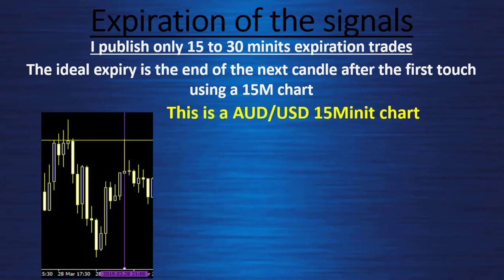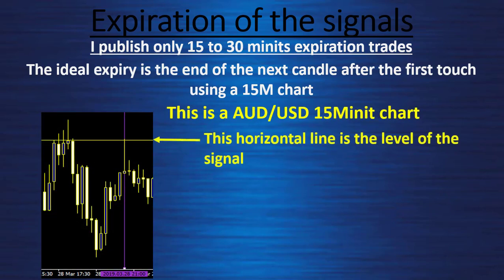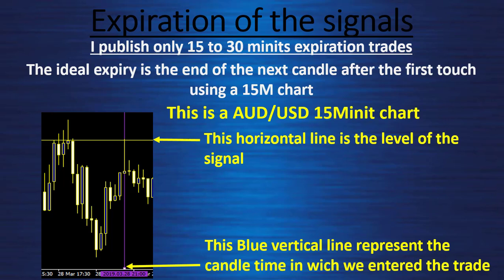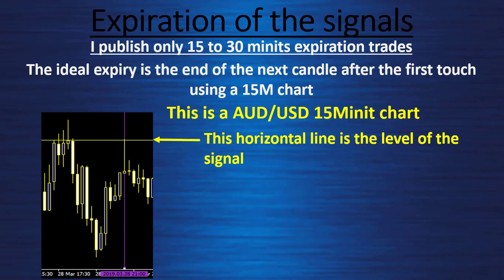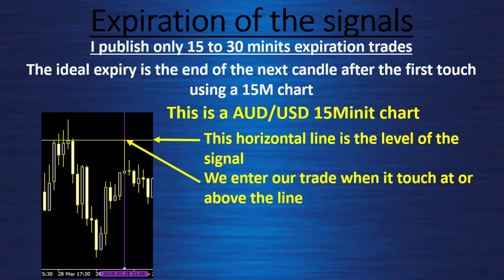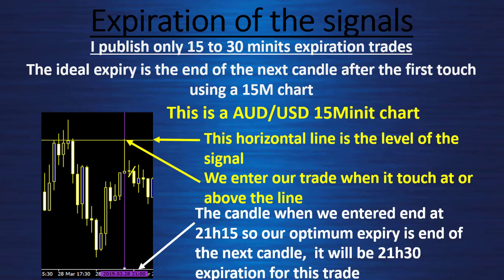This is an AUD/USD 15-minute chart. This horizontal line is the level of the signal. This blue vertical line represents the candle time in which we entered the trade. We entered our trade when it touched at or above the line — this is very important, you take your trade at or above the level. The candle when we entered ends at 21h15, so our optimum expiry is the end of the next candle, which will be 21h30.